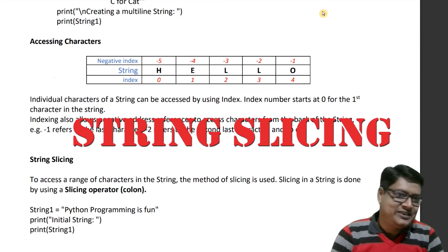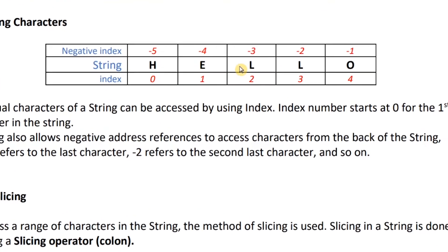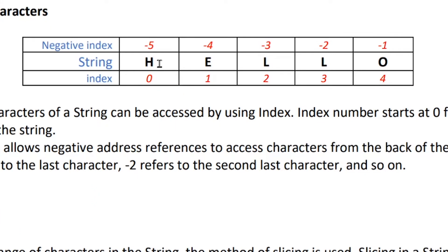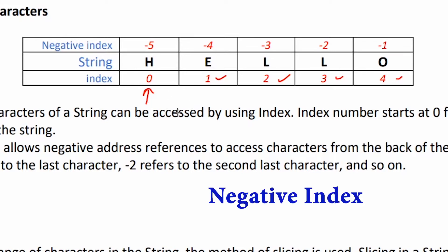Next is string slicing. To understand string slicing, we need to understand indexing. Say we have the string 'hello'. Each character has an index number, and index numbers start from 0 for any string. But in Python there is also a concept called negative indexing.